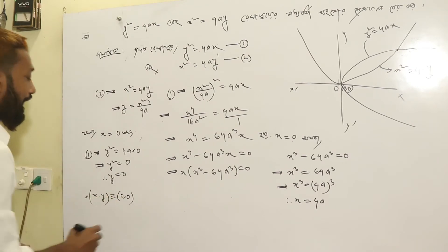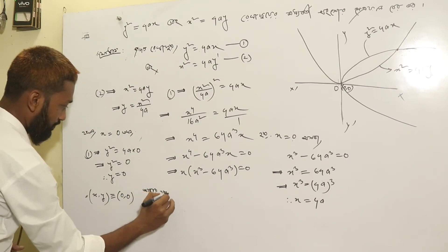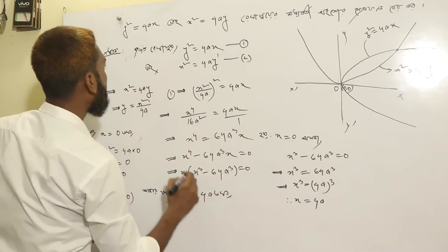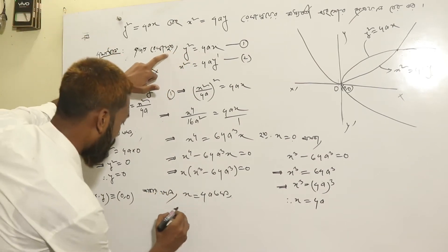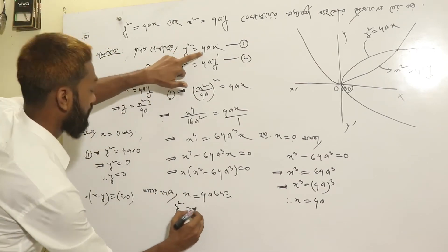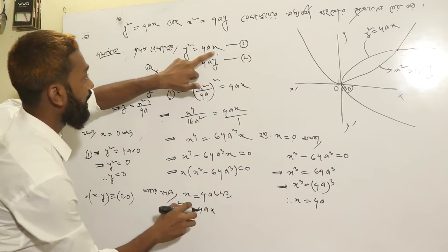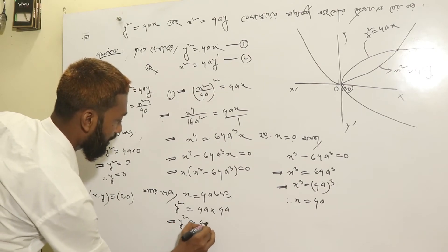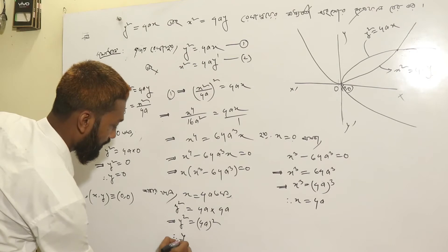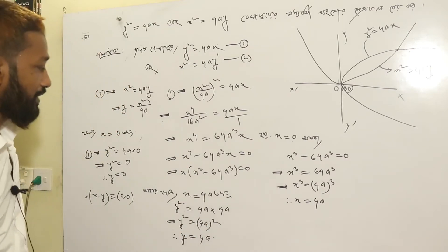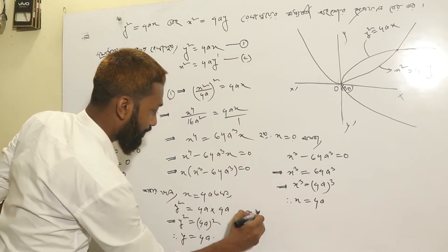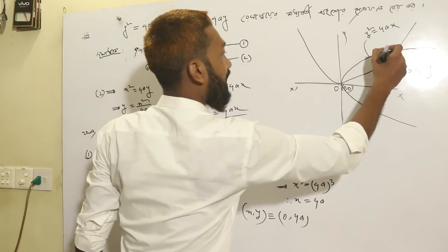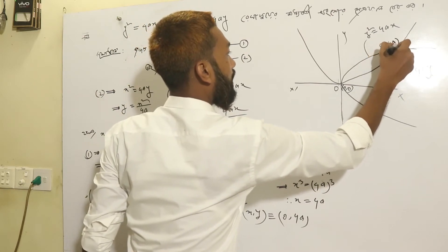Now, when we add x to 4, we add y squared 4a into x to 4a, it implies that y squared. So if you want to add y to 5a, we add y. When we add xy to 0, we add 0 to 0.